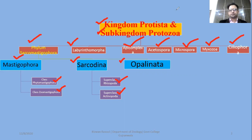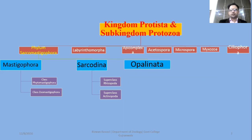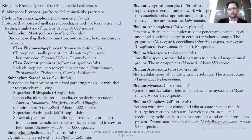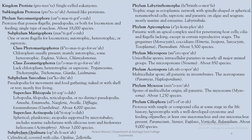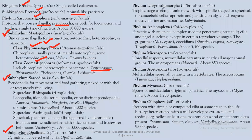This is a screenshot from your textbook. In the textbook, the details are mentioned. In Kingdom Protista, Sub-Kingdom Protozoa, and the phyla include Sarcomastigophora, which has 3 subphyla: Mastigophora, Sarcodina, and Opalinata. Within Mastigophora, Zoomastigophora and Phytomastigophora are included.